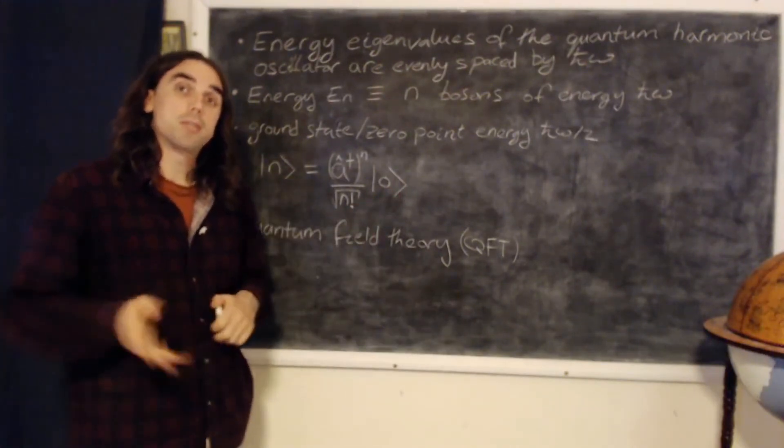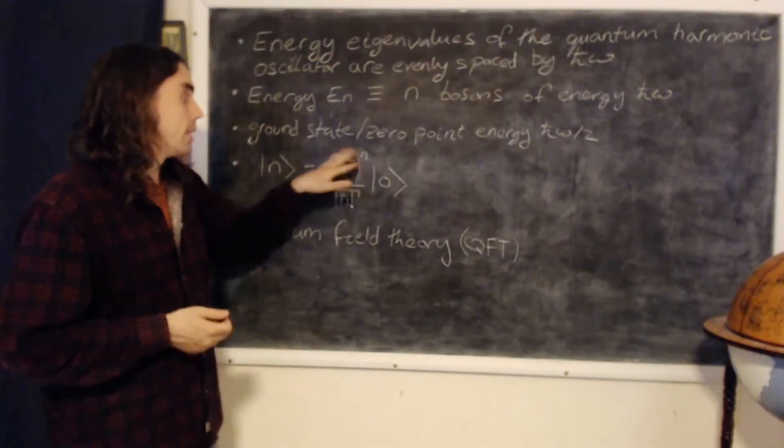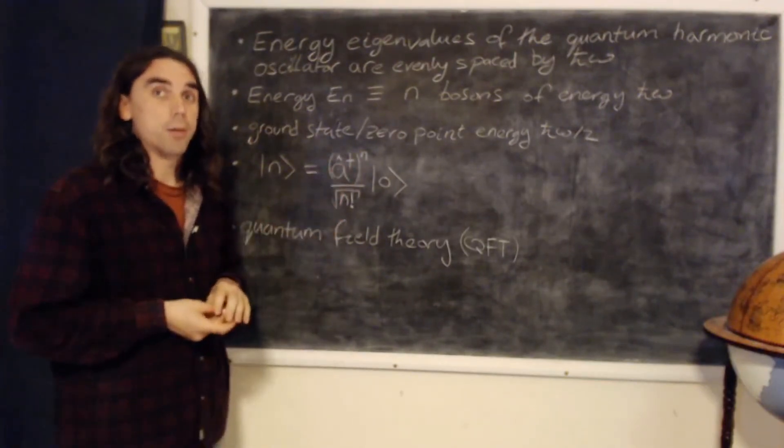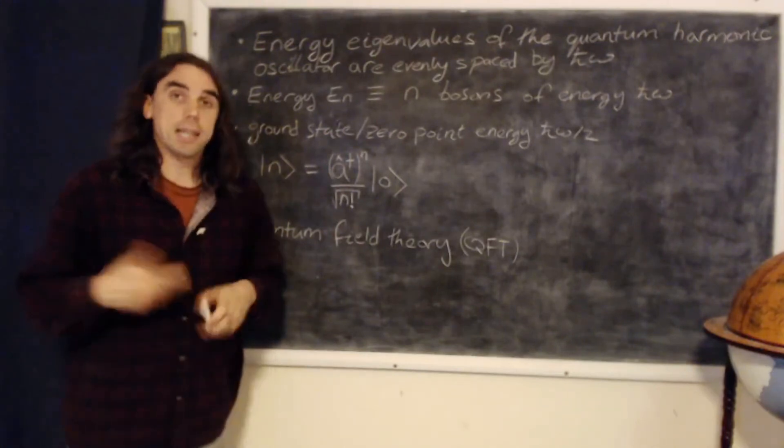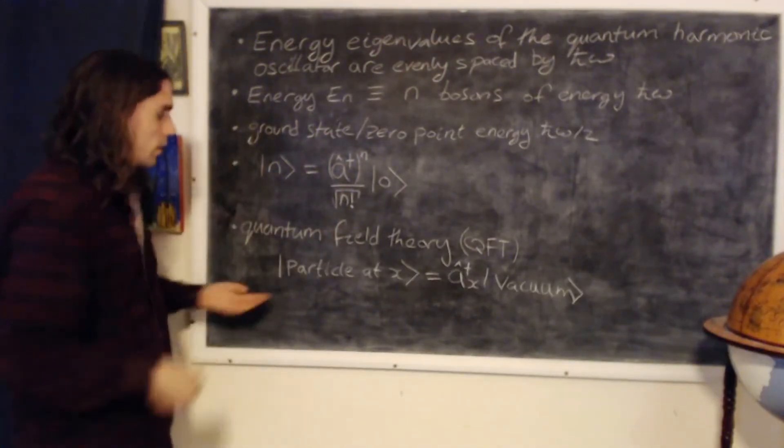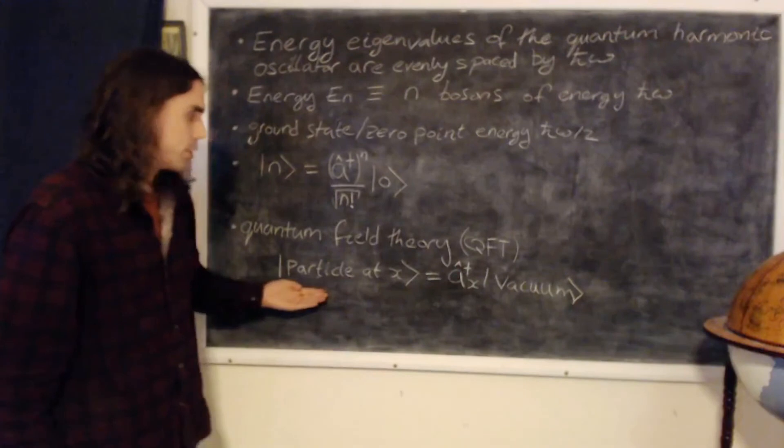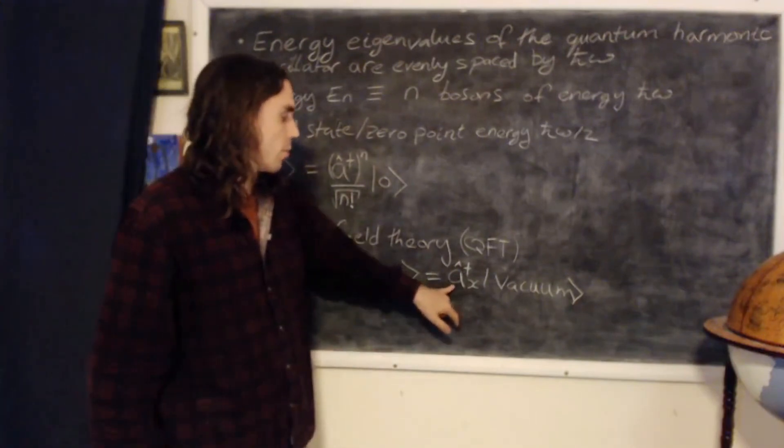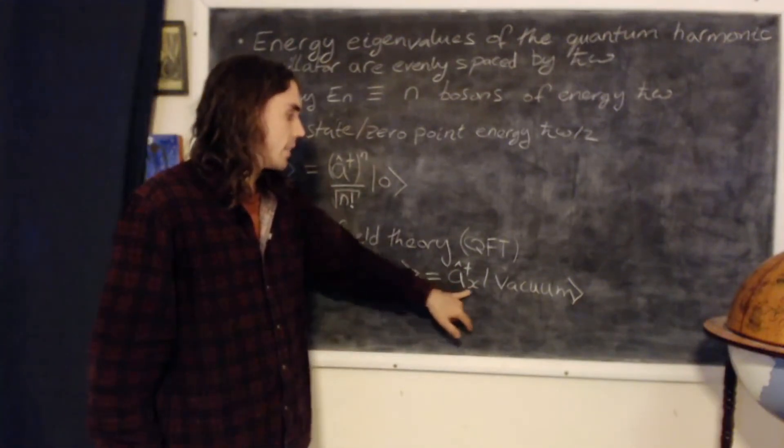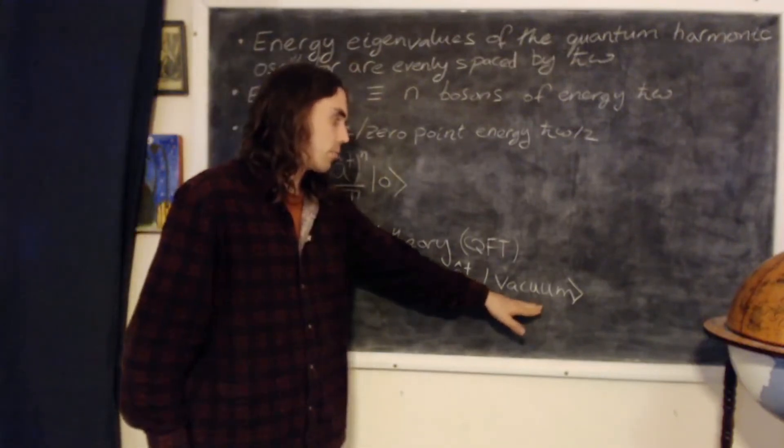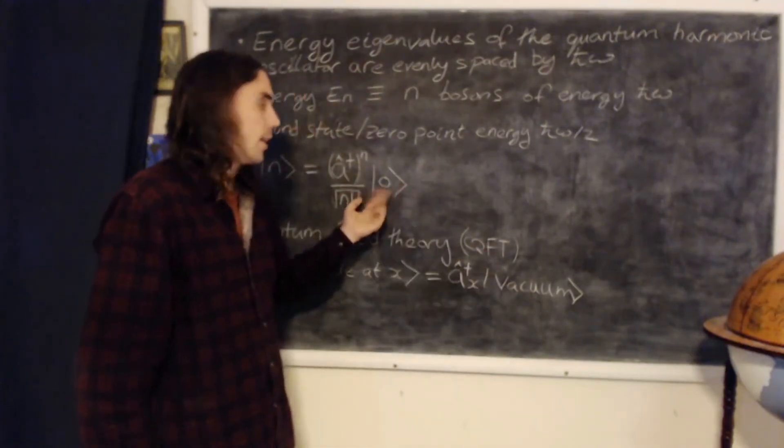And if we want to create a particle at position X, we use a raising operator from the harmonic oscillator problem, and we act it at position X. So we'd say if there's a particle located at position X, we've acted a raising operator located at X in quantum field theory onto the vacuum state, where this is actually often denoted zero.